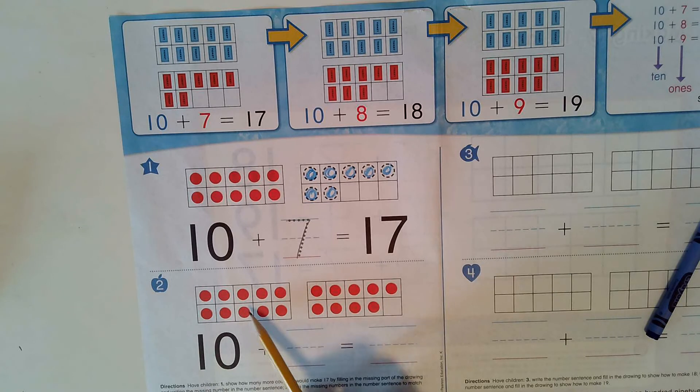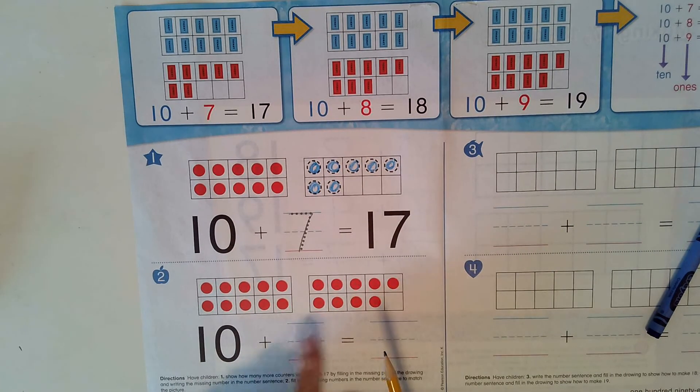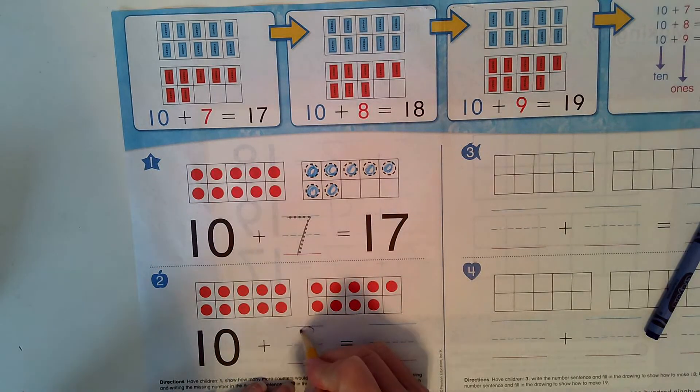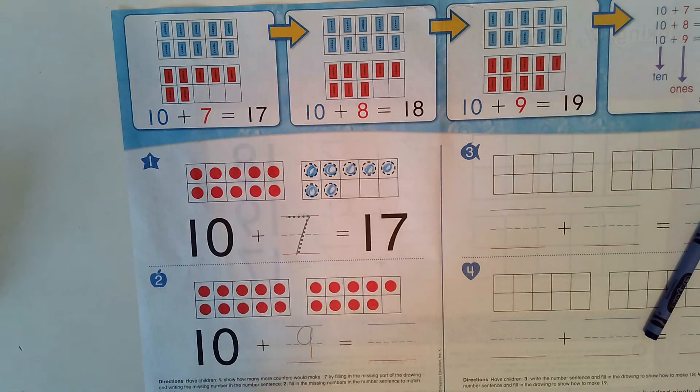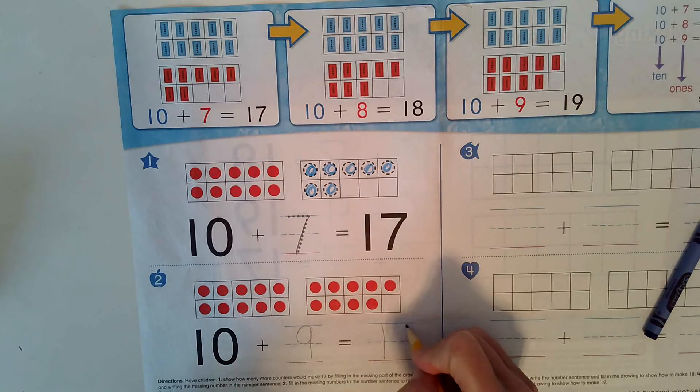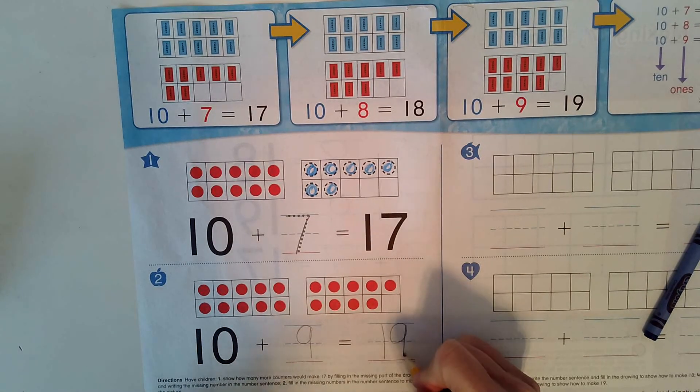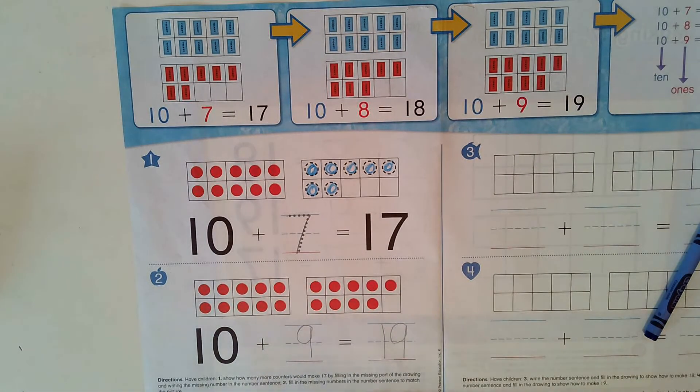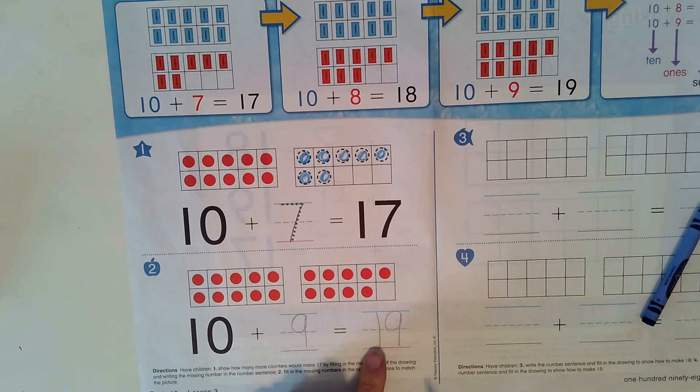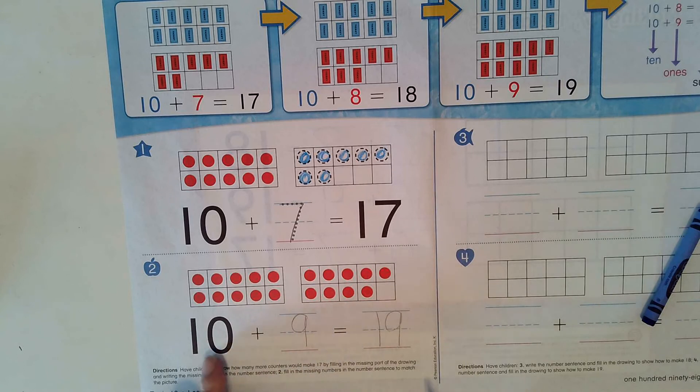How many do we have here? So here's our 10 plus how many more? 1, 2, 3, 4, 5, 6, 7, 8, 9. 10 plus 9 equals 19. 10, 9. If you're not sure it equals 19, you could count, but you might be starting to recognize the pattern. 19 means 1 ten, 9. 1 ten, 9.